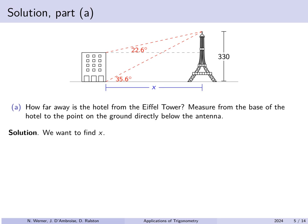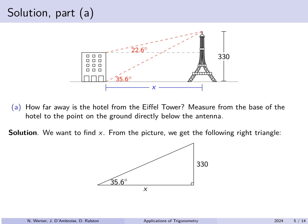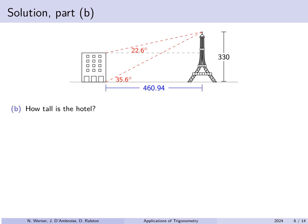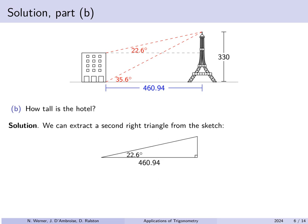We get a right triangle. We have the angle of 35.6 degrees, the height of the Eiffel Tower gives us the opposite length, and the adjacent length x is the unknown distance. Using tangent: the tangent of 35.6 degrees is 330 over x, which gives x as approximately 461 meters. Now that we know our distance to the Eiffel Tower, we can answer how tall the hotel is. We form a second right triangle. We know the distance to the Eiffel Tower — 460.94 meters — with an angle of elevation of 22.6 degrees, and we want to find the distance y.